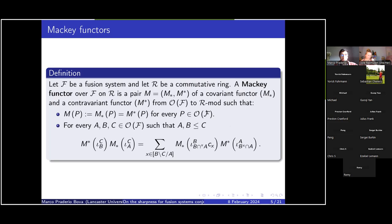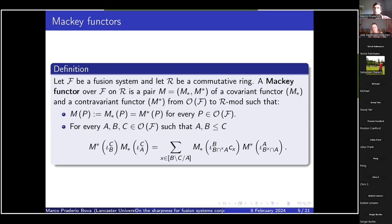We will be interested in a definition due to Dress, which can be applied to our case of Macki functors over fusion systems. Given a fusion system F and a commutative ring R, we define a Macki functor over R as a pair of a covariant functor M_* and a contravariant functor M^* that go from the orbit category of F to the category of finitely generated R-modules. These two covariant and contravariant functors satisfy two conditions: first, they coincide on all objects in the orbit category of F; and second, they satisfy the Macki formula.